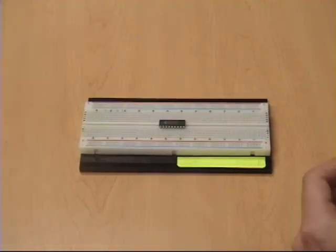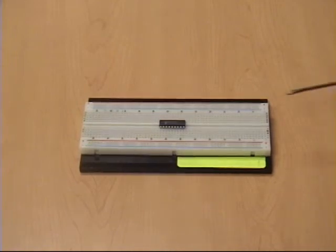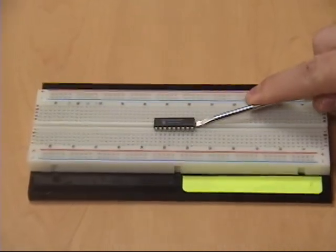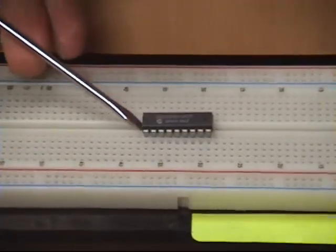If you don't have a chip puller handy, you can use any other kind of tool like a screwdriver. And what you want to do is work under the chip carefully on both sides to release it from the board, and then you can pull it out by hand.